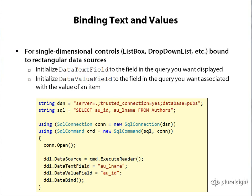While binding to simpler controls, you'll quickly run into the problem of taking a rectangular data source and binding it to a single-dimensional control like a ListBox or DropDownList. If you're retrieving data from a database and placing it into a DropDownList, you need to create a mapping for which columns of your query map onto which properties of the items within those controls. There are two fields available in all single-dimensional controls that support data binding: DataTextField — the field from the data source you want to display — and DataValueField — the field you want set as the value element in the rendering.